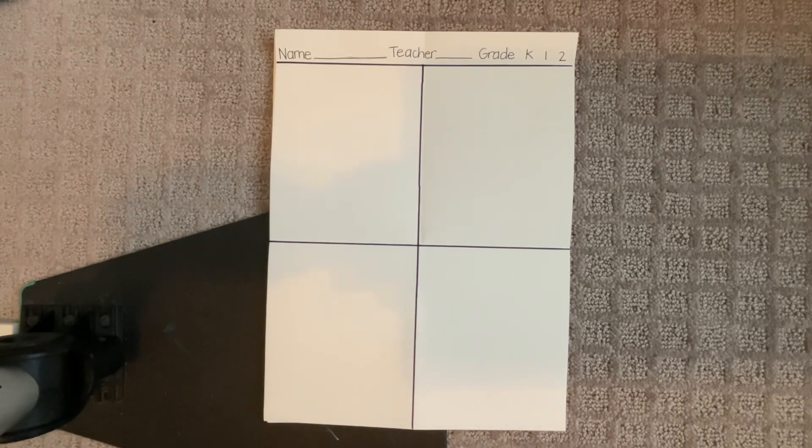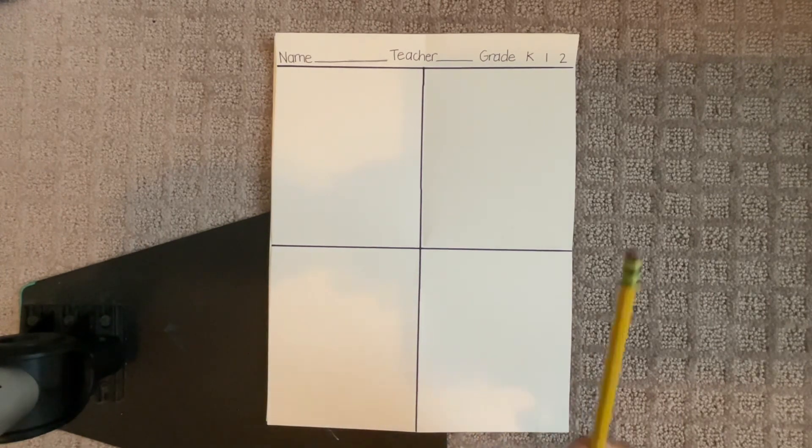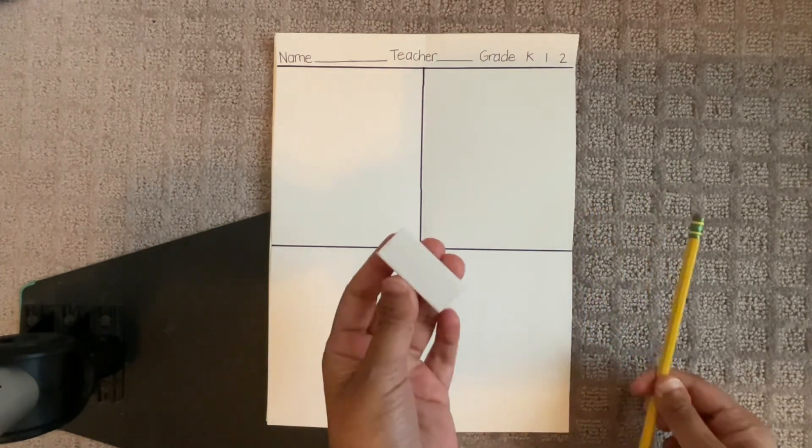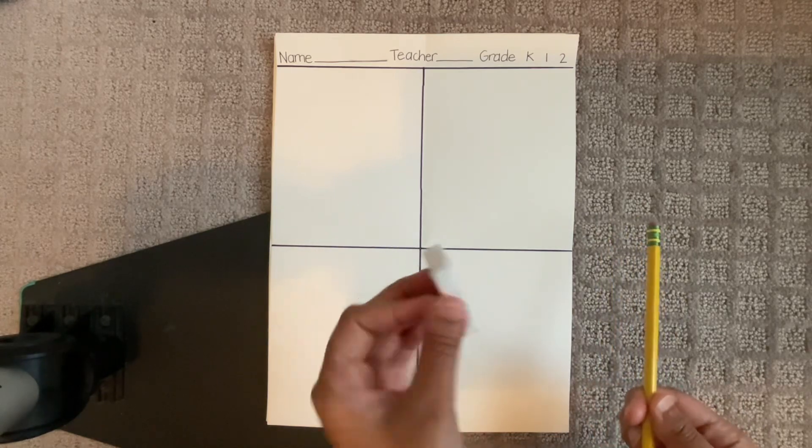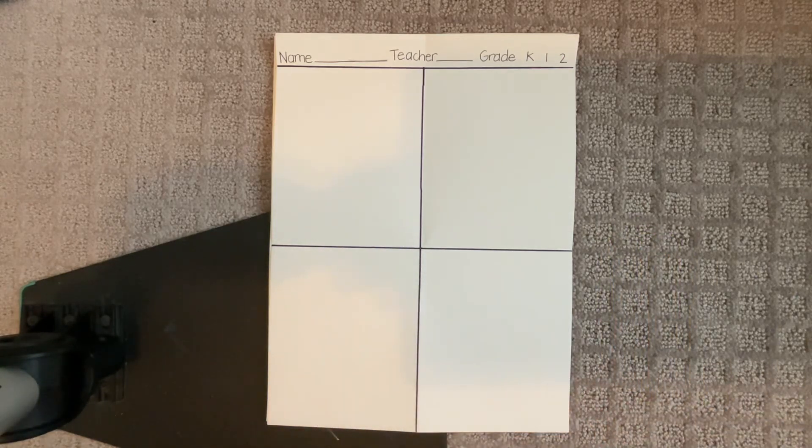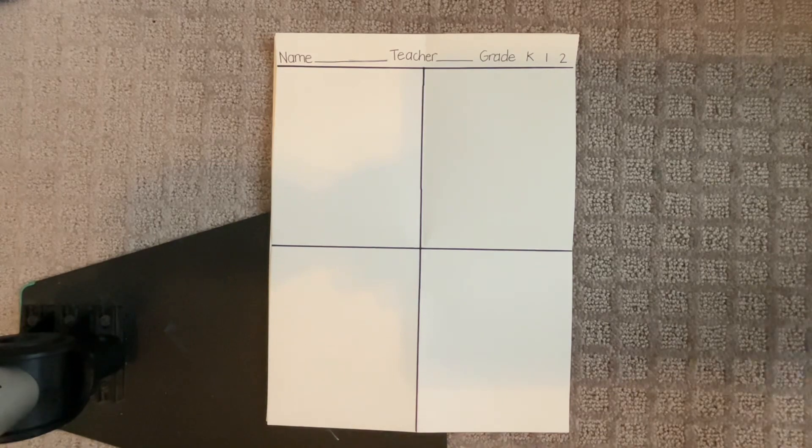Alright, so let's get started. You will need a paper that looks like this, a pencil with an eraser, or if you don't have an eraser, a separate eraser, and let's go ahead and start off by filling out the top of the paper.